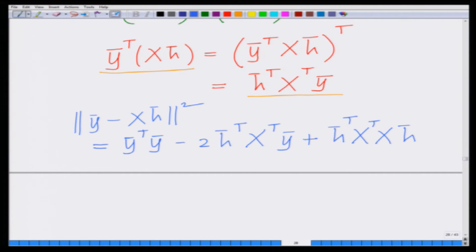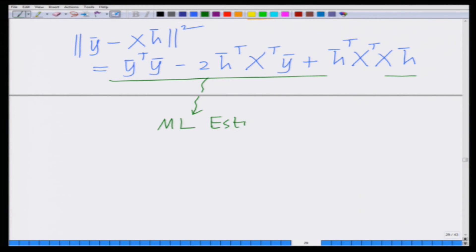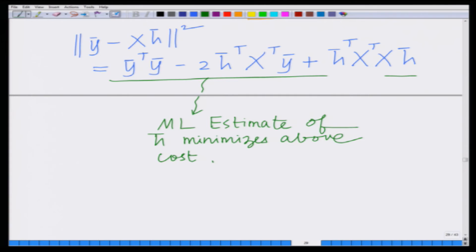The maximum likelihood estimate of the channel vector h̄ is the one which minimizes this cost function. This is known as the least squares estimate or maximum likelihood estimate of the channel vector.